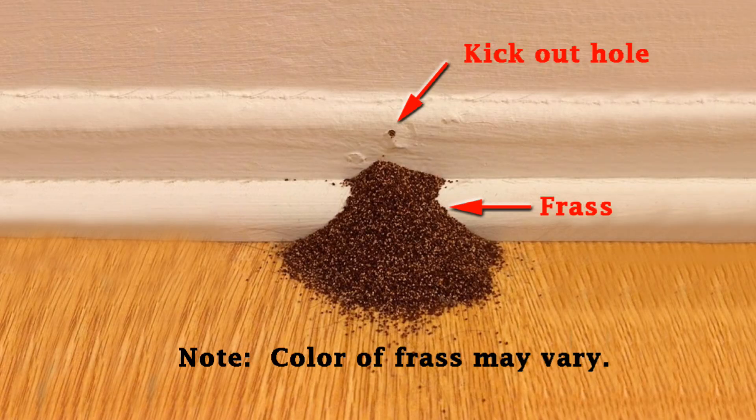If you cannot find mud tubes, then look inside the house for frass and kickout holes. Frass looks a little like sawdust or tiny pellets, and you can find it near walls, under windows, in the attic, in the basement, crawl space, and even inside your cabinets. If you see frass, you can be pretty sure that there is a kickout hole just above the pile, and when you see frass and kickout holes you most likely do have drywood termites.